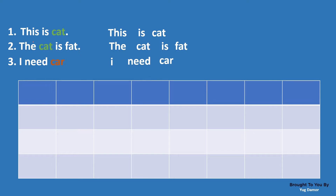Our first step is to convert these sentences into numerical form. For that, we will follow the bag of words approach. In the bag of words approach, we will take all the unique words present in these sentences. First we will break all these sentences into words.